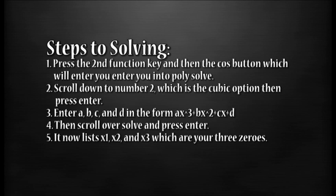Number 3: Enter A, B, C, and D in the form AX³ + BX² + CX + D. Number 4: Then scroll over solve and press enter. And finally, number 5: It now lists X1, X2, and X3, which are your zeros.